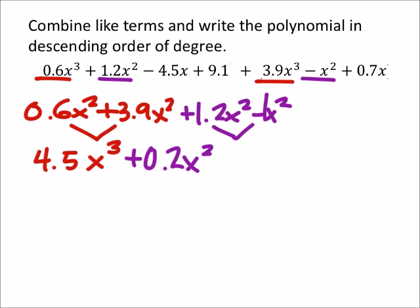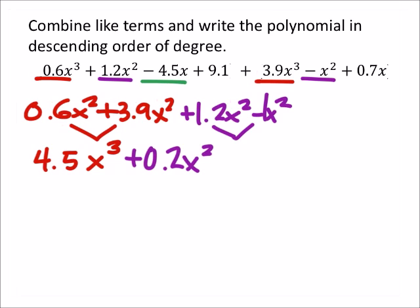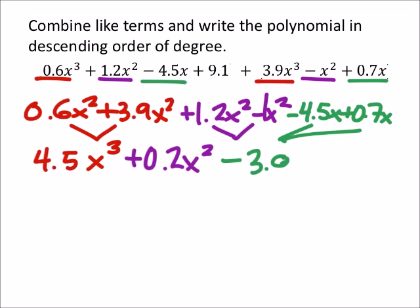All right. The next term I have is this negative 4.5 x, and it looks like I have another term with just an x, the 0.7 x. So negative 4.5 x plus 0.7 x. So again, combining these two, I'll put it over here. I'm going to have a negative, looks like 3.8 x.